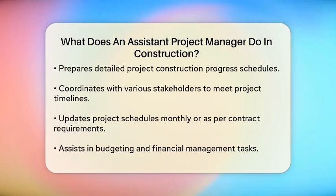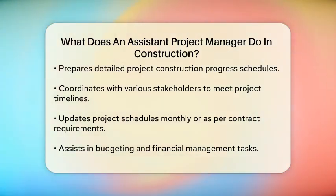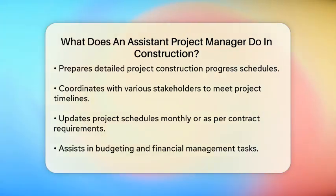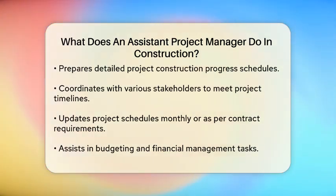Budgeting and financial management are also key responsibilities. The assistant project manager assists in preparing the contract schedule of values, securing executed subcontract and purchase order agreements, and expediting payment from the owner to subcontractors. They also help in preparing change proposals, change orders, and revisions to the master cost breakdown due to changes or management revisions.